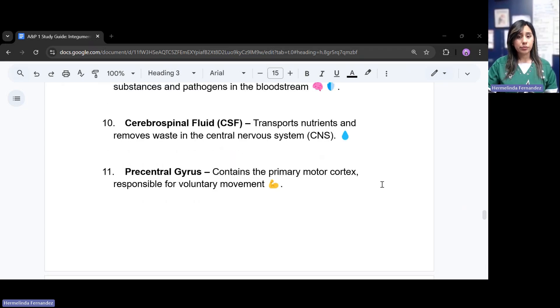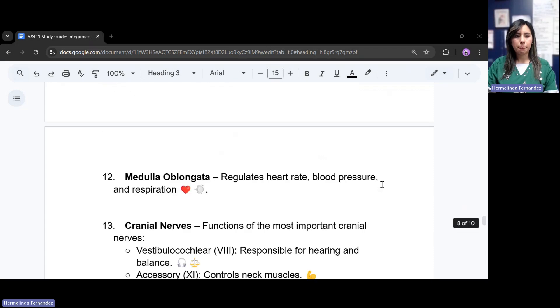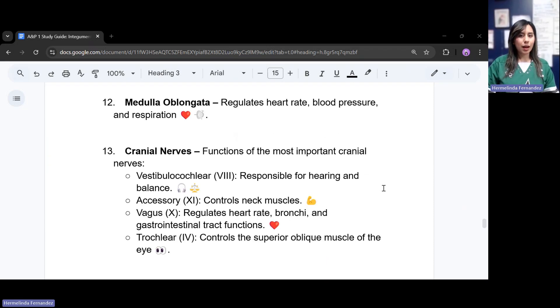The precentral gyrus contains the primary motor cortex and is responsible for those voluntary movements. The medulla oblongata regulates our heart rate, our blood pressure, and also our respiration. They're in control of all of that.